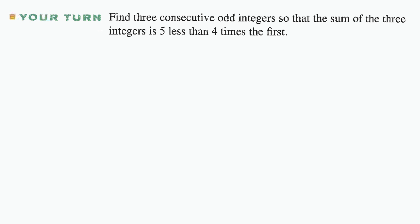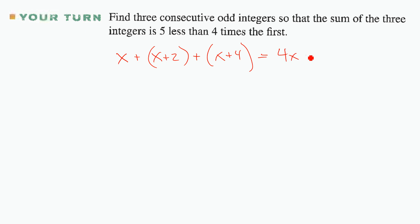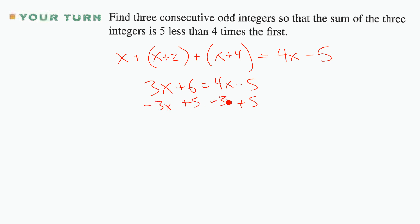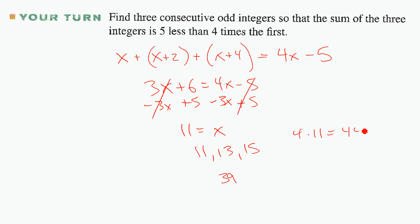Your turn: find three consecutive odd integers such that the sum of the three integers is five less than four times the first. Setup: x + (x+2) + (x+4) = 4x − 5. Simplify: 3x + 6 = 4x − 5, so 11 = x. The numbers are 11, 13, and 15. Check: 11+13+15 = 39; four times 11 is 44, minus 5 is 39. Correct!